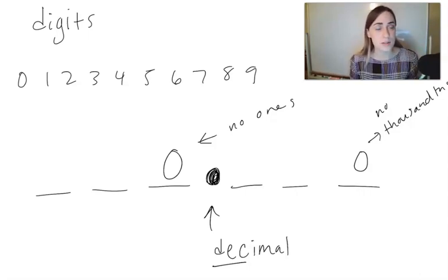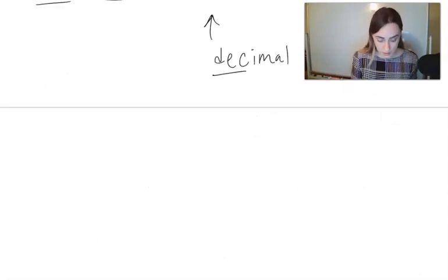The more you can talk about the zero in a number communicating something about that place value, the more helpful it will be for students to think flexibly about the fact that we can write certain numbers in different ways.